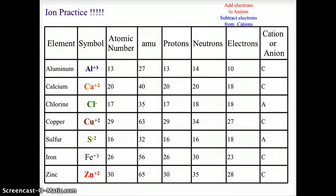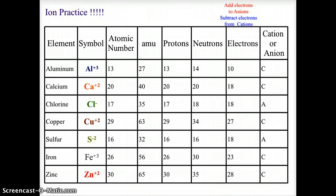Let's check to see how you did. Aluminum ends up being a cation at plus 3. Calcium is a cation at plus 2. Chlorine is an anion at negative 1. Copper is a cation at plus 2. Sulfur is a negative 2 anion. Iron is a positive 3 cation, and zinc is also a positive 2 cation. Please check your electron and proton counts and verify your AMUs on the periodic table. Hopefully now you have a better understanding of both isotopes and ions, and how to determine the subatomic particles in each. Keep working on your chemistry - it's all that matters.